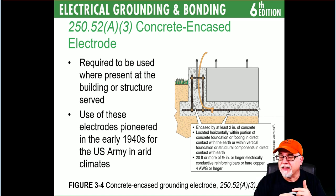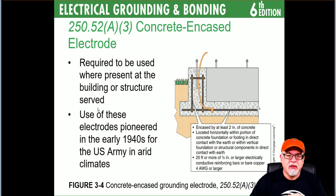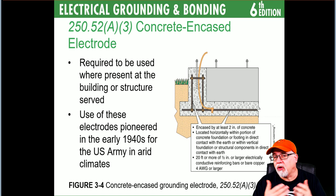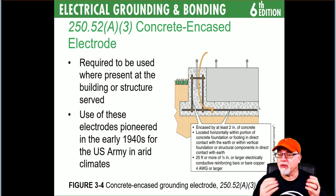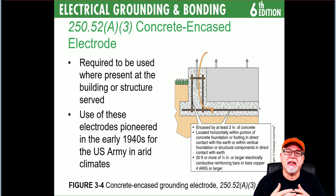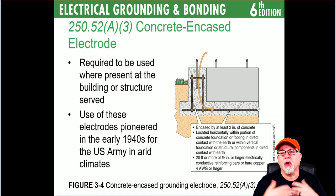As an electrician coming in after the fact, you need to consider whether somebody made connection to it and whether the timing was right to get that four-gauge copper down to the concrete encased electrode. This was used all the way back in the early 1940s — the U.S. Army used it in dry climates like Arizona. Concrete retains a lot of moisture, and the concrete encased electrode works in conjunction with the rebar. Together they are the electrode — it's not just the rebar.